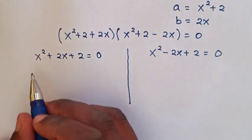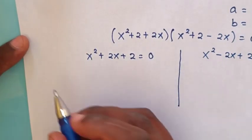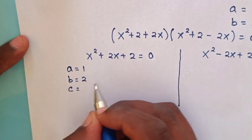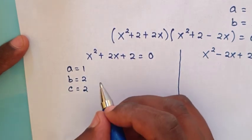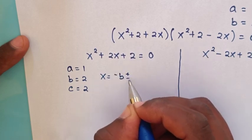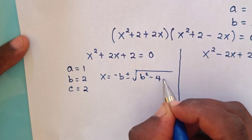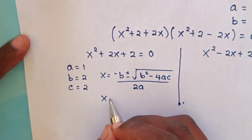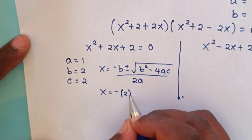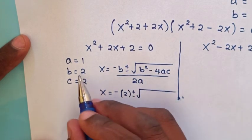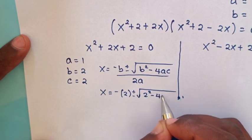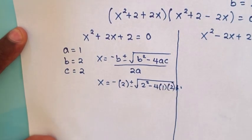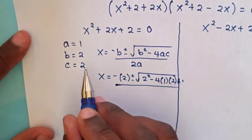To solve the first case, this is a quadratic equation where a = 1, b = 2, and c = 2. From the quadratic formula, x = (-b ± √(b² - 4ac)) / 2a. So x = (-2 ± √(2² - 4·1·2)) / (2·1).